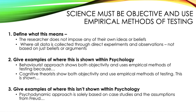Science must be objective and use empirical methods of testing. If you were to talk about this, you'd first want to define what it actually means. Objectivity is where the researcher does not impose any of their own ideas or beliefs upon what they are testing, and instead relies purely on the facts. Empirical methods of testing are where all data is collected through direct experiments and observations, and this isn't based on just beliefs or arguments — everything they say can be shown through direct experiments and observations.